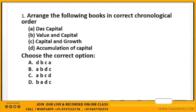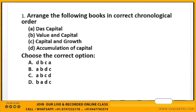We have four books: A. Das Capital, B. Value and Capital, C. Capital and Growth, and D. Accumulation of Capital. The first book is Das Capital by Karl Marx, published in 1867.